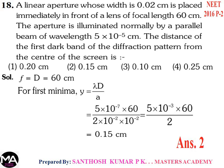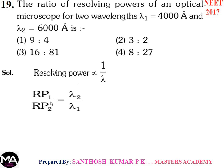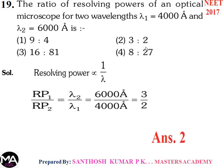Question 19: The ratio of resolving powers of an optical microscope for wavelengths λ1 = 4000 Å and λ2 = 6000 Å. Resolving power is inversely proportional to wavelength. Therefore RP1/RP2 = λ2/λ1 = 6000/4000 = 3/2. Option 2: the ratio is 3:2.